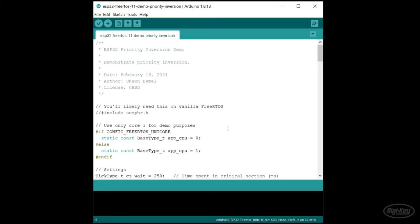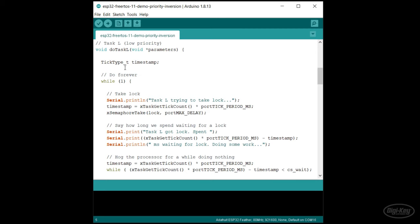Let's look at a real unbounded priority inversion demo. We'll create three tasks, just like in the example. The low-priority task takes a lock and spends about 250 milliseconds in a critical section. When it's done, it releases the lock and sleeps for 500 milliseconds.